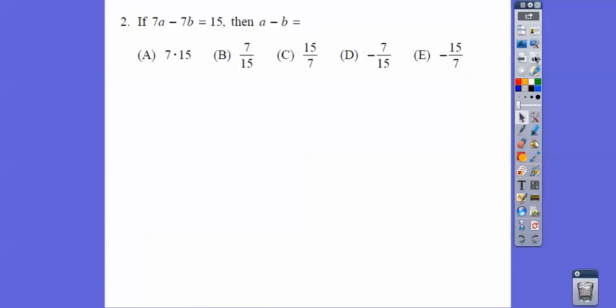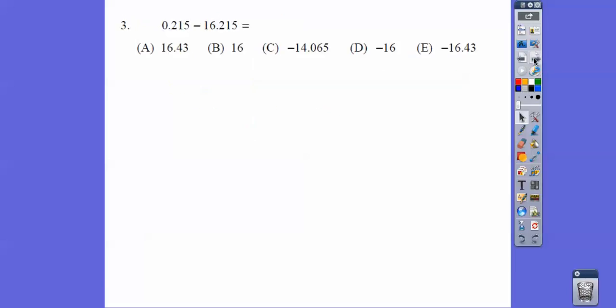All right, so 7A minus 7B, let's pull out the 7. When we pull the 7 out and divide both sides by 7, we get choice C right there.